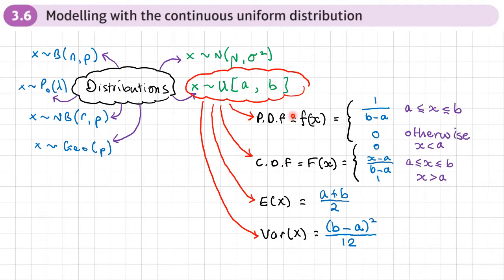And I thought it'd be useful here to put a recap of all we know about the Uniform or Rectangular Distribution. So the PDF, CDF, how we find the mean, and how we find the variance.